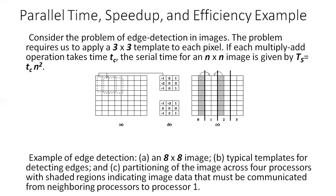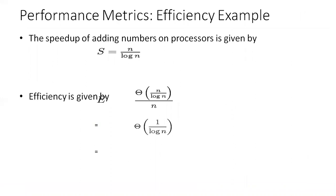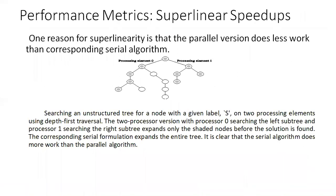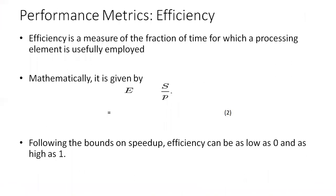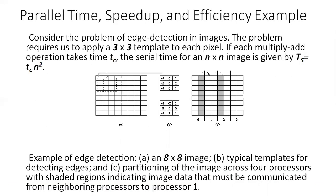Another example — parallel time, speedup, and efficiency — will be seen in the next video. We stop here because in this video we have seen two very important characteristics of parallel performance metrics: speedup and efficiency. We also discussed super-linear speedup. In the next video, we will start the article on parallel time, speedup, and efficiency example. Thank you very much. Good day.